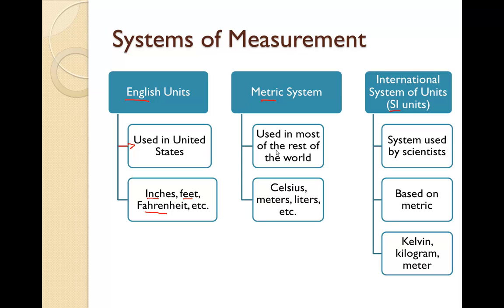The metric system is used throughout the rest of the world. Instead of Fahrenheit, they use Celsius. Instead of inches and feet, they use meters, and for volume, liters and so on. The SI units are probably what you're going to be referring to most in chemistry. This is a system of units made specifically for scientists, and they're based on the metric units.